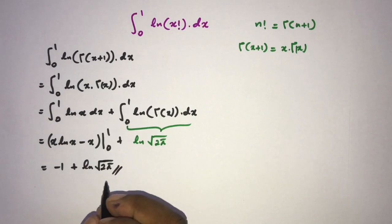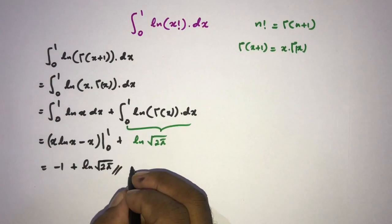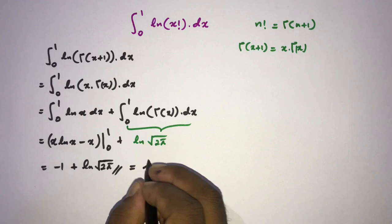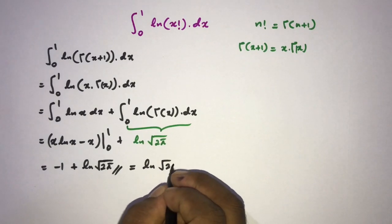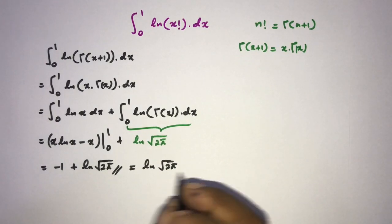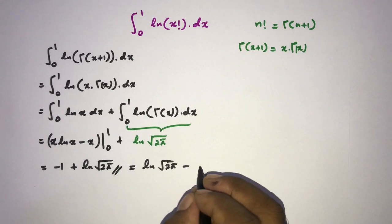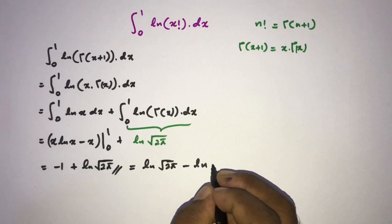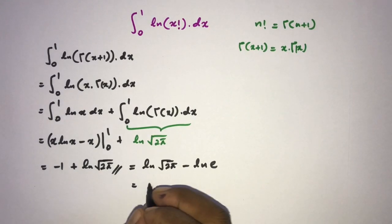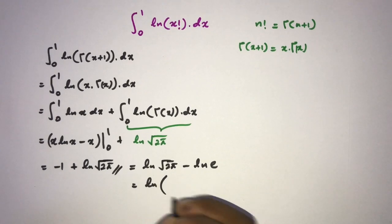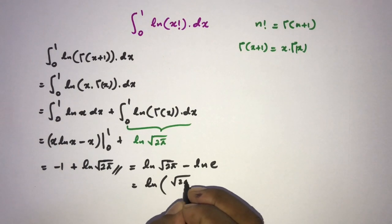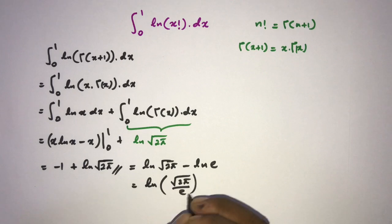This is the answer. Alternatively, you can express this answer like natural log of square root of 2 times pi, here minus 1. Instead of 1, we can write natural log of E. Then according to property of natural log, we can write natural log of square root of 2 times pi over E.